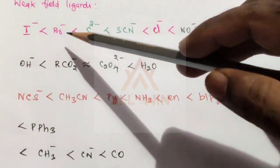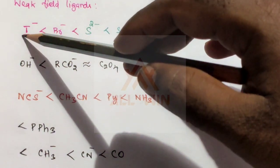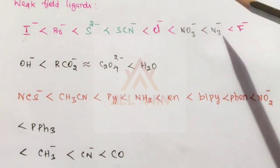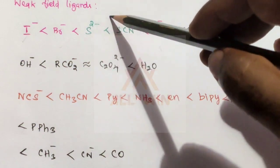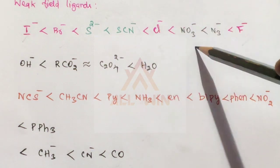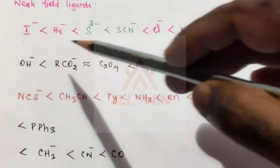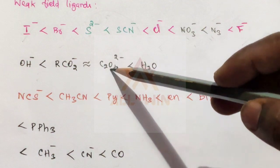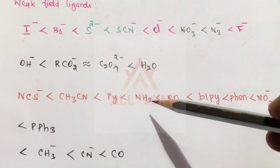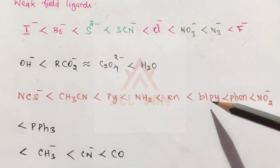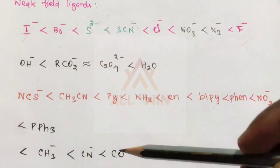The full spectrochemical series from weak to strong: I⁻, Br⁻, SCN⁻, Cl⁻, NO₃⁻, F⁻, then OH⁻, RCO₂⁻, Oxalate (C₂O₄²⁻), H₂O, then NCS⁻, Pyridine, Ammonia, Ethylenediamine (en), Bipyridine, 1,10-Phenanthroline, NO₂⁻, and CO.